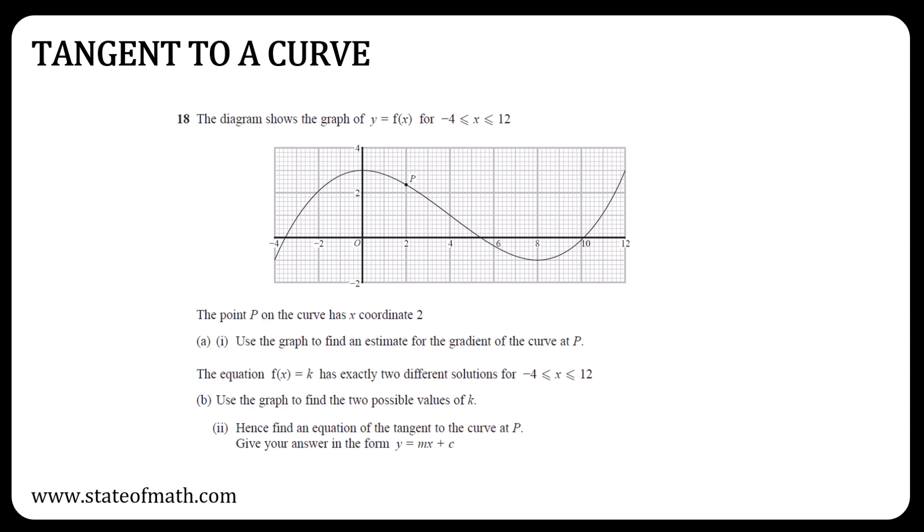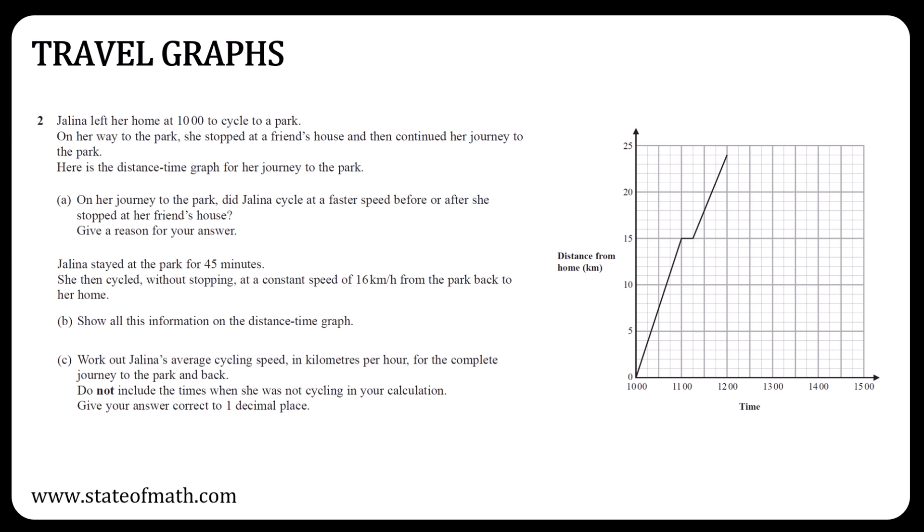Finding the gradient to a curve by drawing a tangent is a question that rarely appears. Will this be the year they decide to bring this back? We'll have to wait and see. But while you wait for Paper 2 HR, make sure you know how to answer it. Same goes for travel graphs. Extremely rare, but better be ready. Remember, there are two types of travel graphs, distance time and speed time graphs.